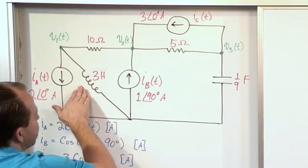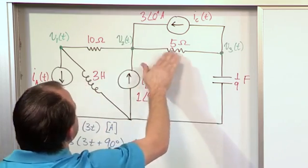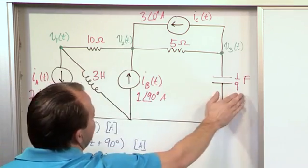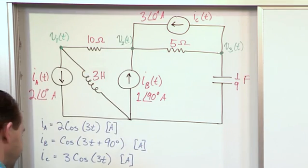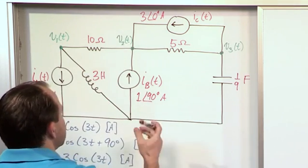Now, we have the 3 Henry inductor and the 5 ohm resistor, 10 ohm resistor, and we have a capacitor, 1 ninth of a farad. So we need to convert those guys off into impedances.